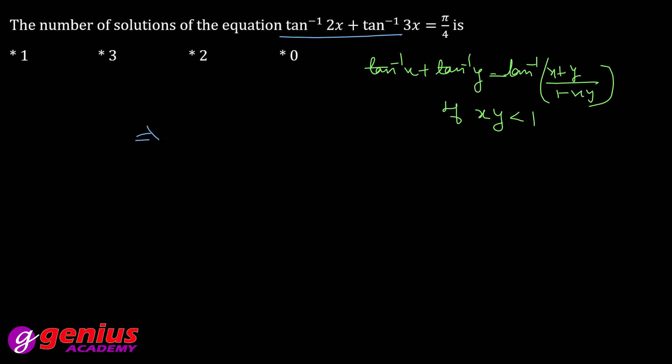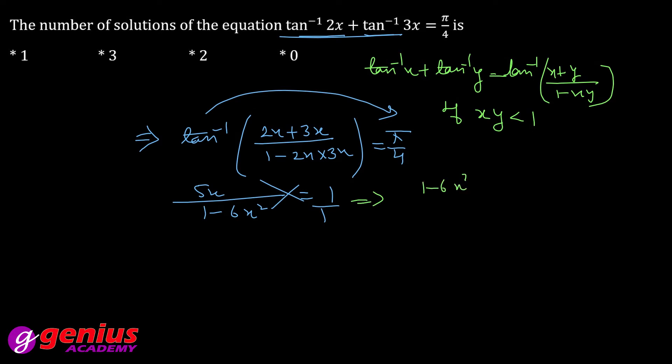We put the formula in this question. Tangent inverse 2x plus 3x over 1 minus 2x multiply 3x equal to pi by 4. This will be 5x over 1 minus 6x square. And tangent pi by 4 is 1. Now, what will we do? Cross multiplication. 1 minus 6x square equal to 5x. So, this will be 6x square plus 5x minus 1 equal to 0.